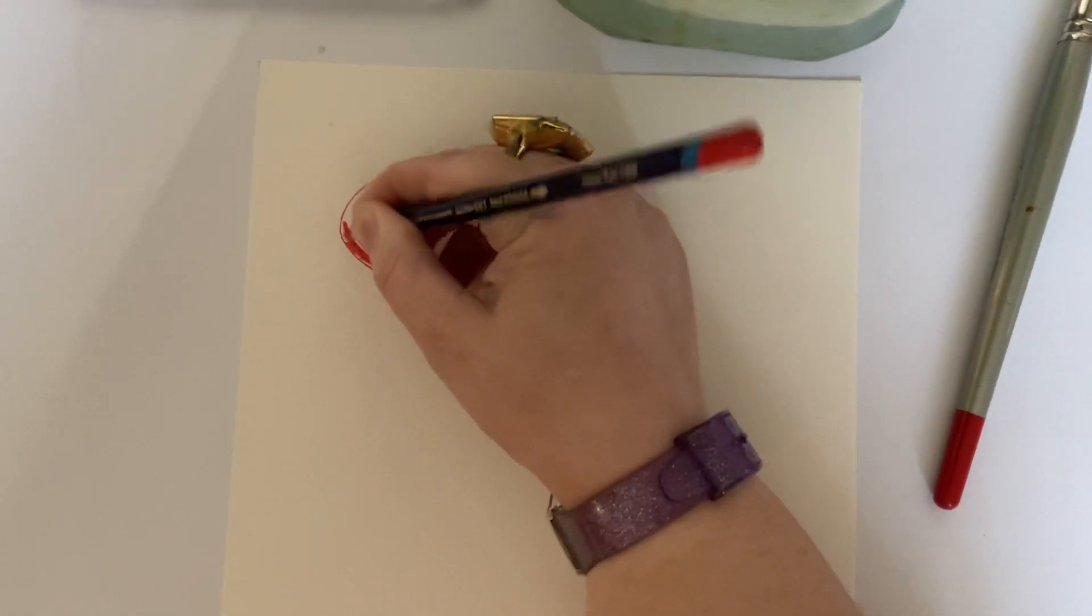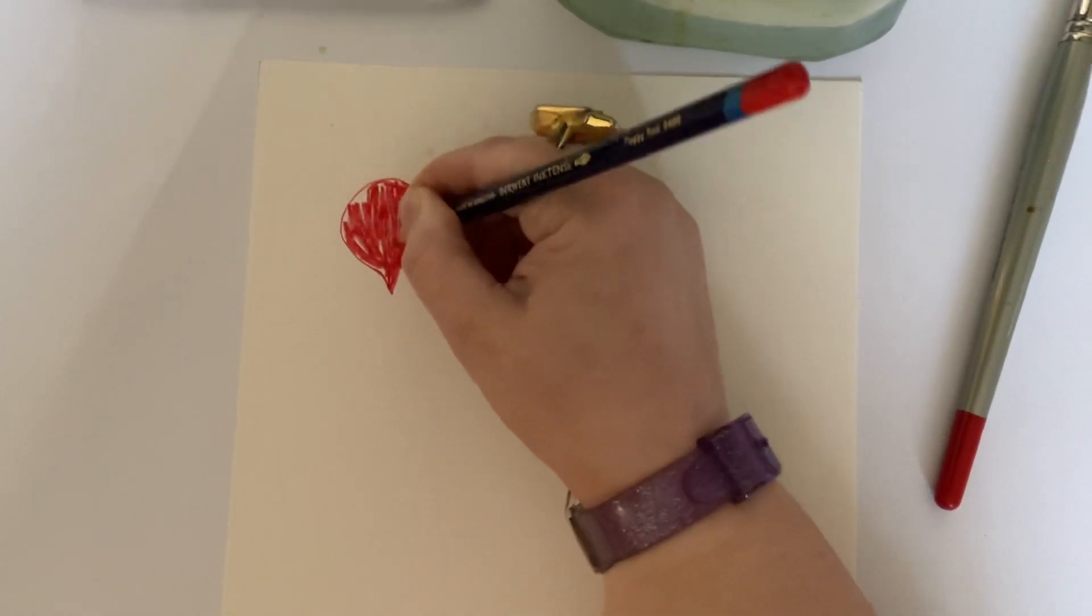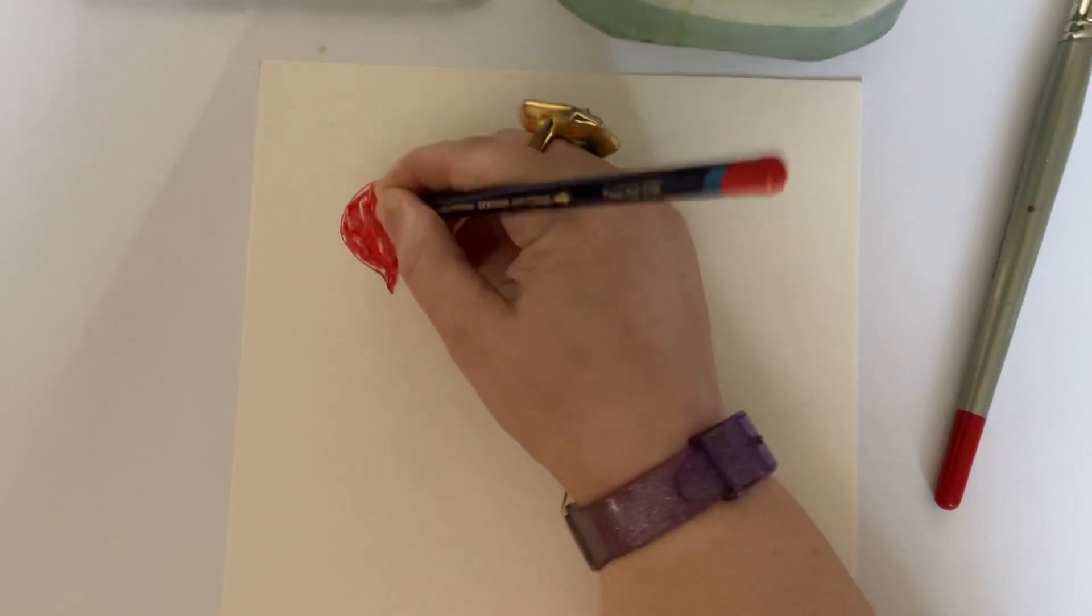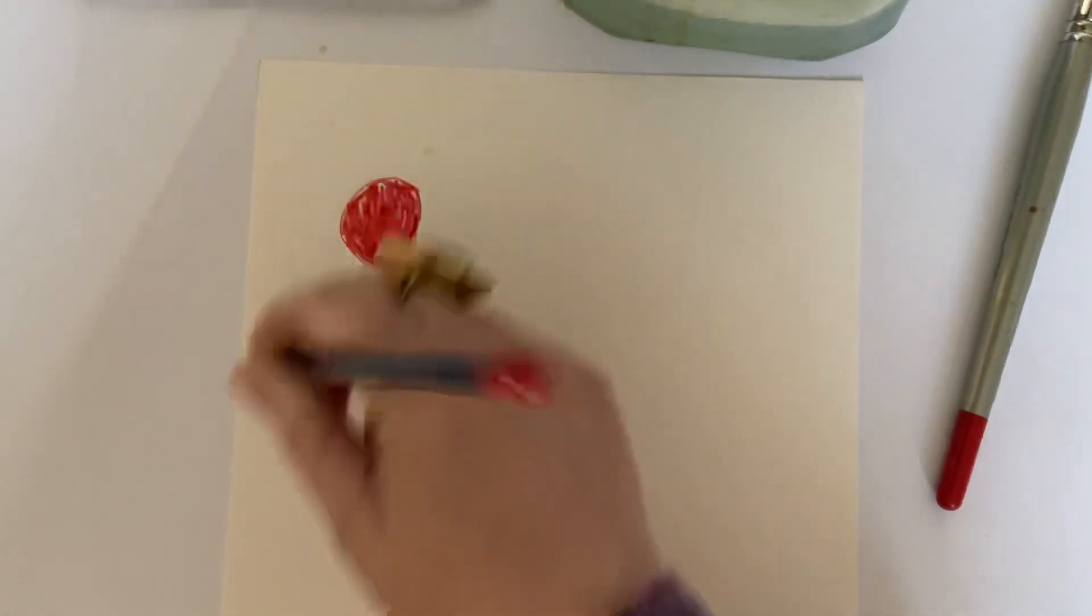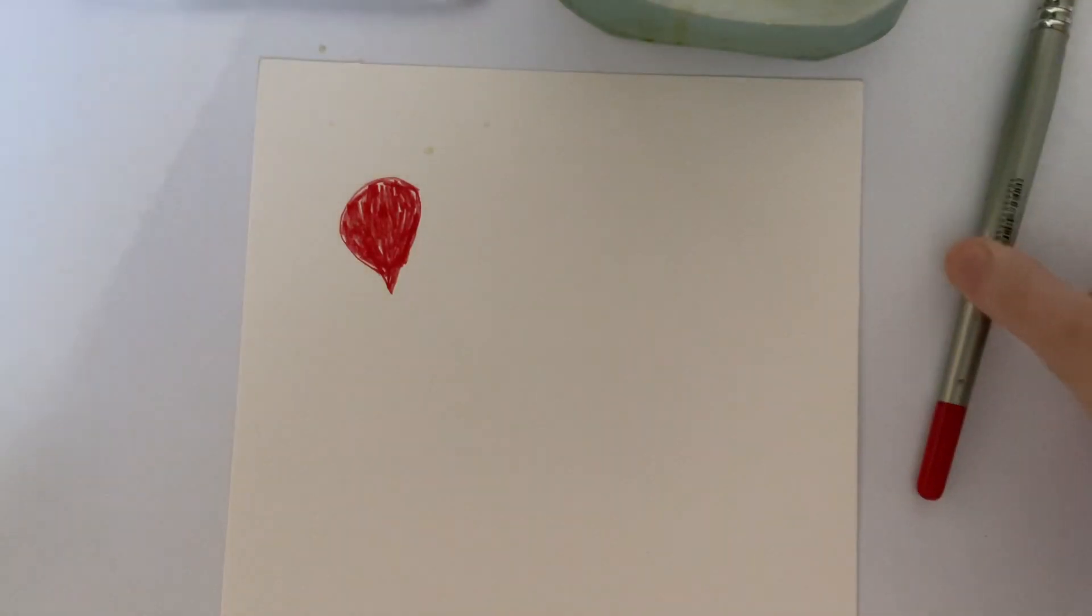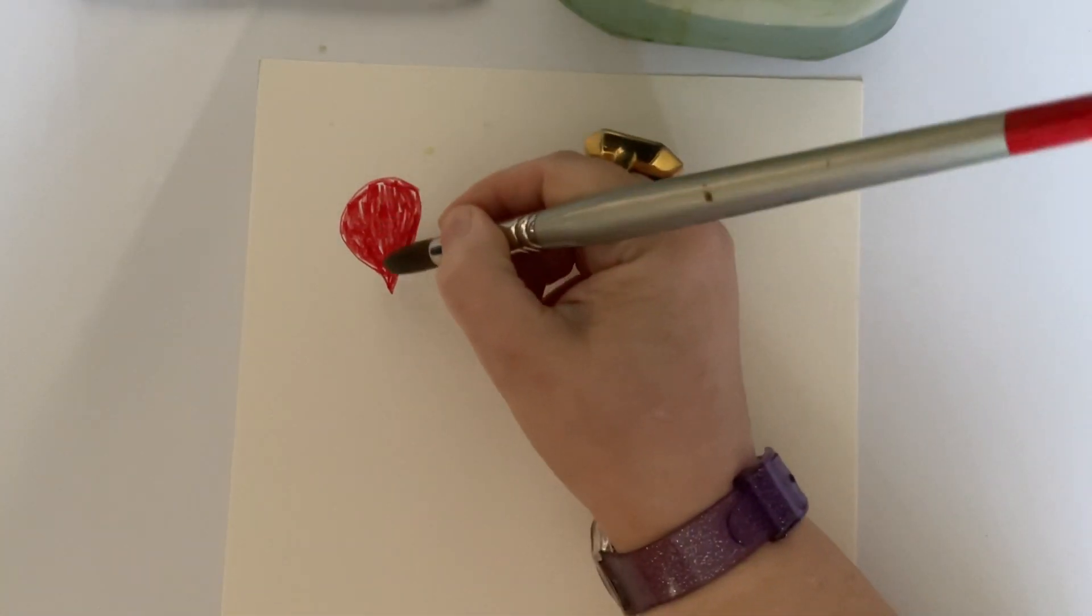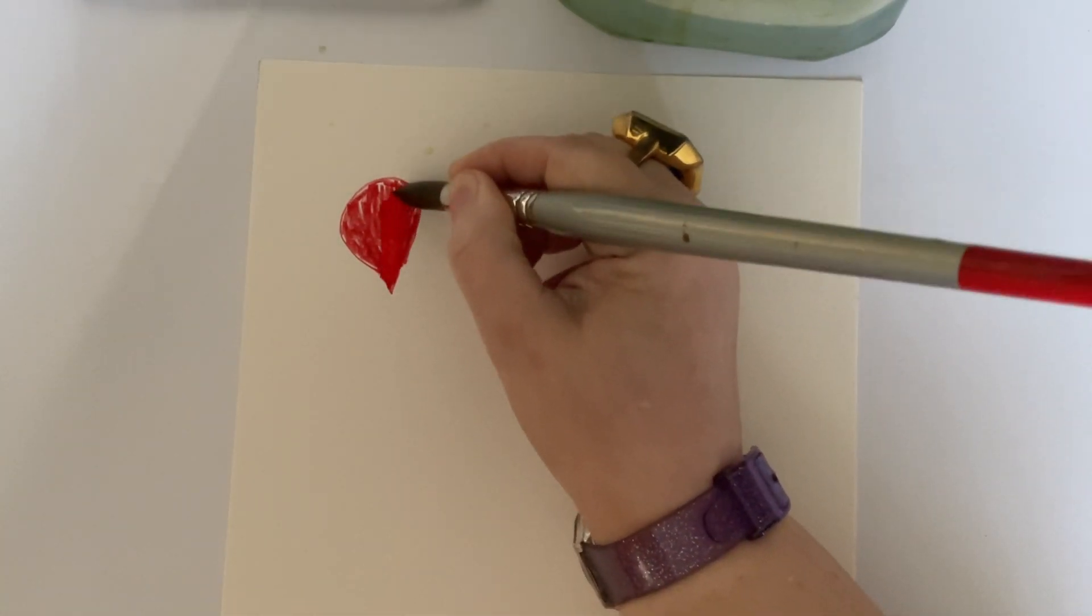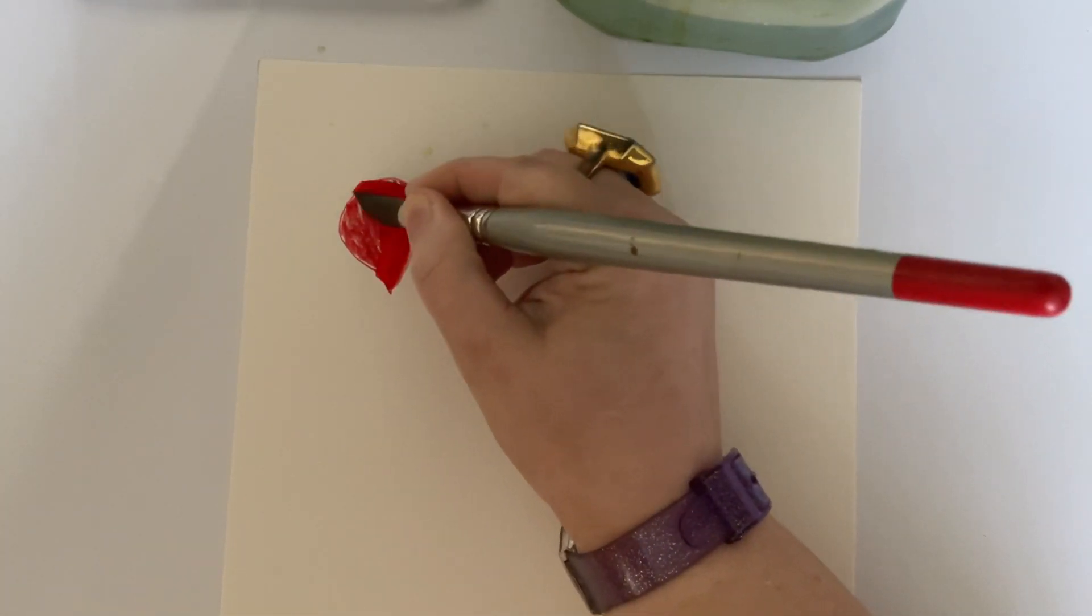I'm just showing you the color, so you color it in. You don't have to be particularly neat as you can see. Once we smooth it over with a brush and blend it, it will smooth itself out.